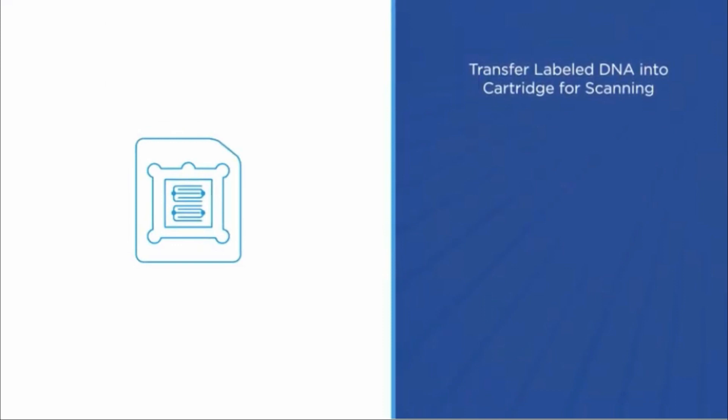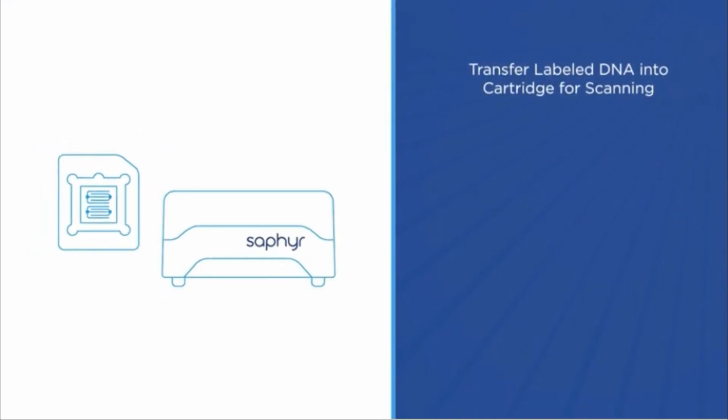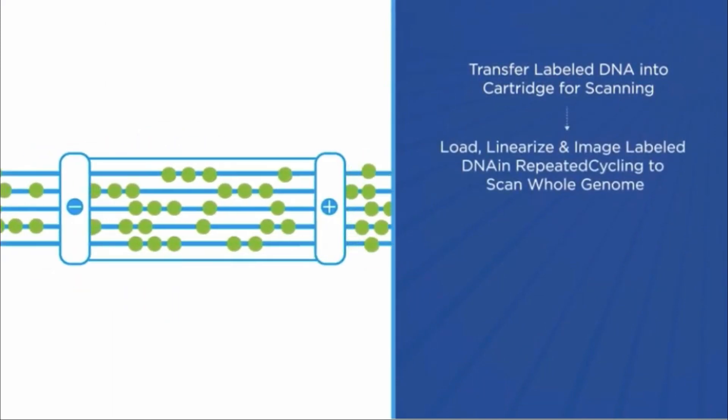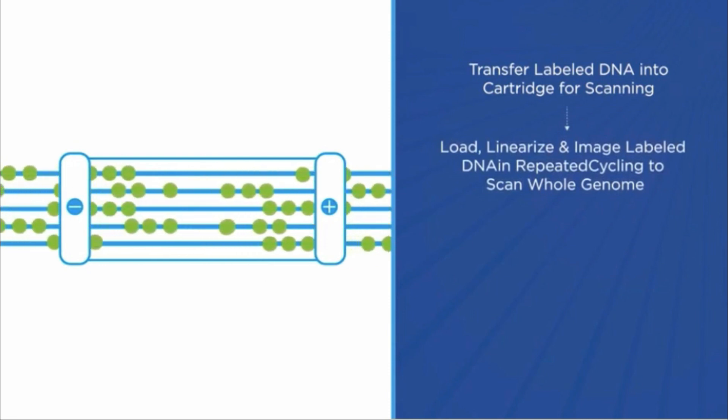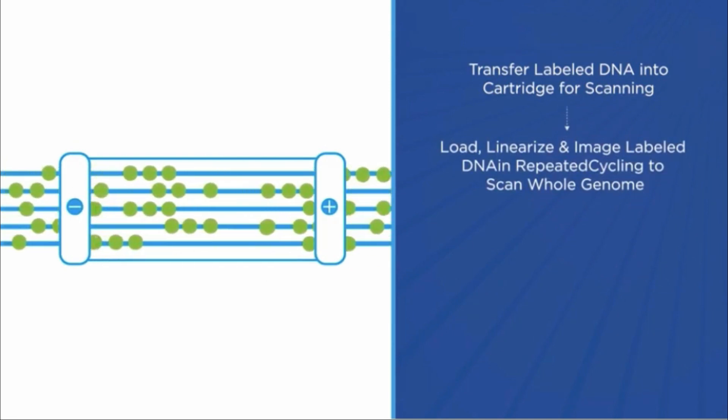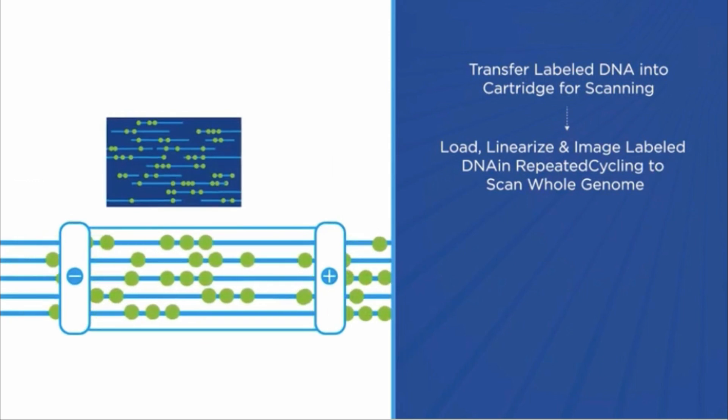The full length of the DNA remains intact during isolation and labeling, preserving the architecture for the next step: imaging the genome. The labeled DNA is pipetted into the Saphyr chip and placed in the Saphyr instrument. In the chip, the DNA is uncoiled or linearized across thousands of parallel nanochannels and imaged, revealing its fluorescent label patterns.